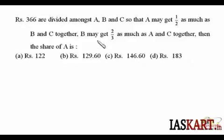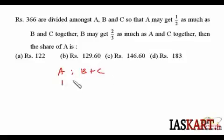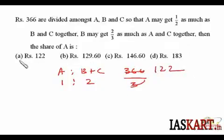Friends, very simple problem. A is getting half of B plus C. That means A is to B plus C is 1 is to 2. That means of the entire portion, that is three parts, A is getting one part. That means A is getting one-third of 366, so it's 122. As simple as that.